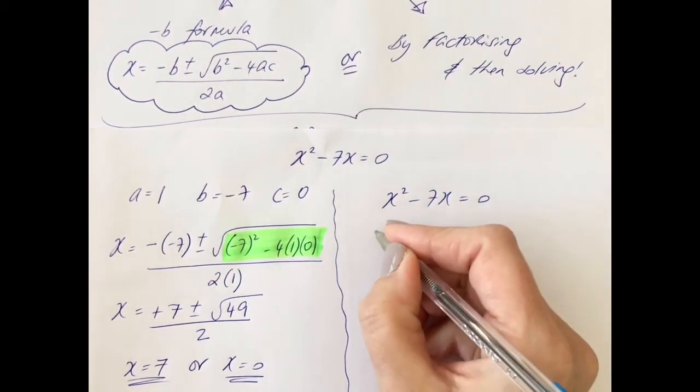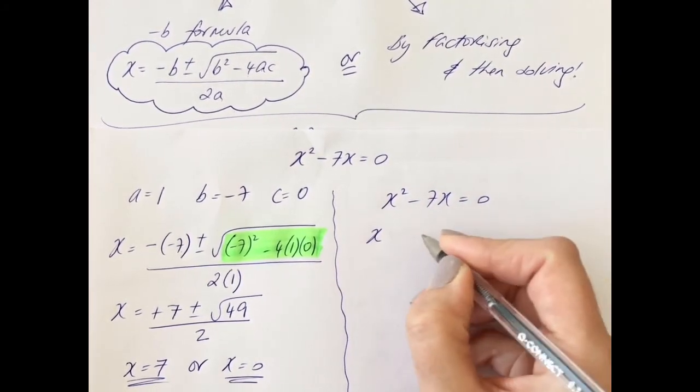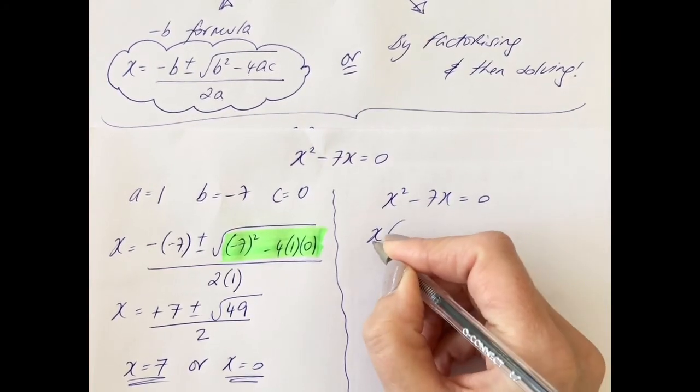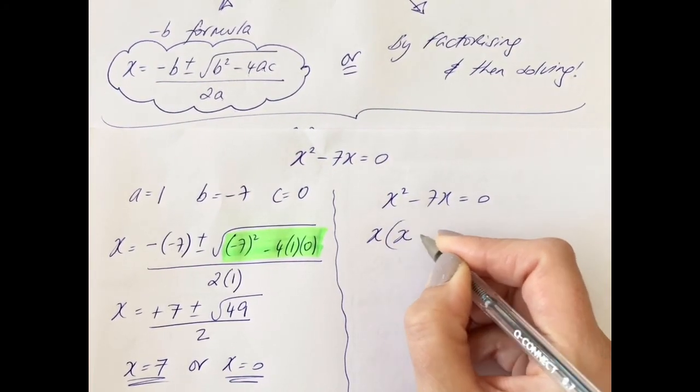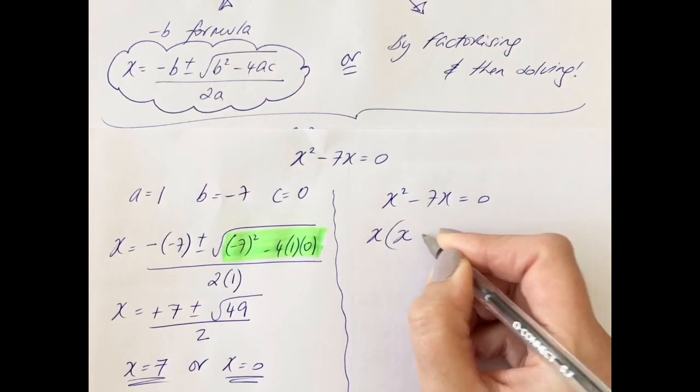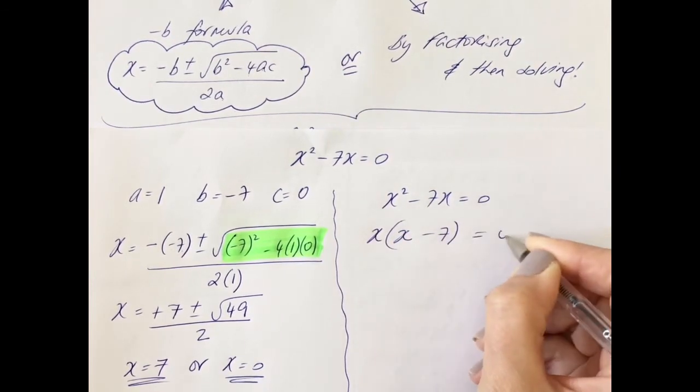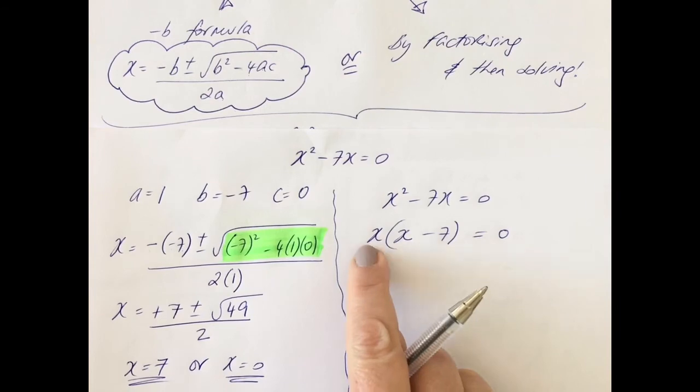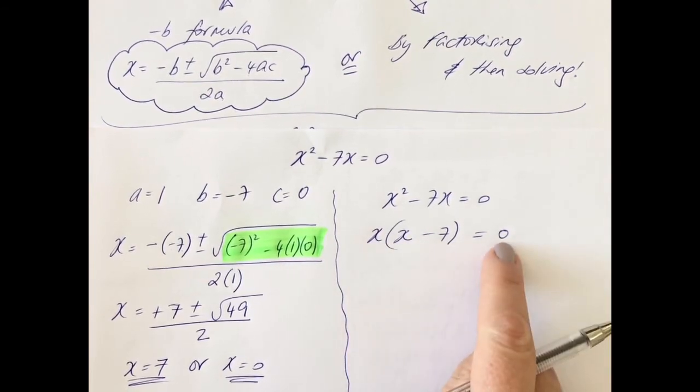I can pull out the common terms here, so we'll pull out the x, open up your bracket. What would you multiply to x to get x squared? The answer is x. What would you multiply to x to get minus seven x? And the answer is minus seven, equals zero. Now you have two things that multiply to make zero.